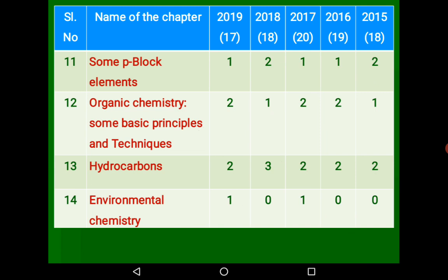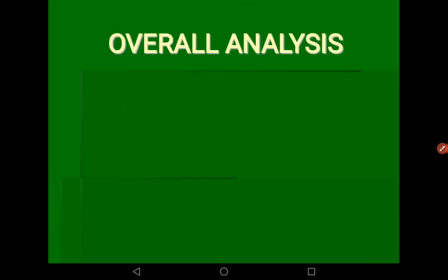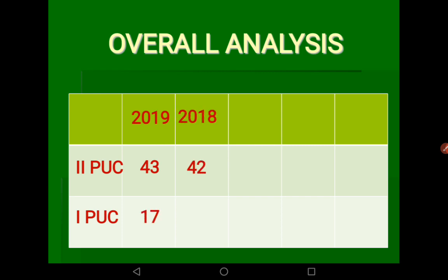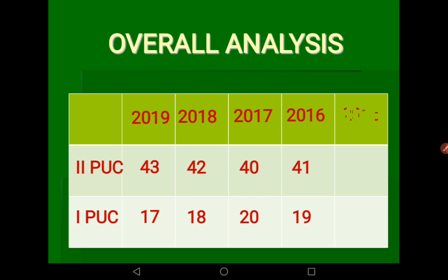In overall analysis, for 2019: 43 questions from Second PUC and 17 from First PUC. In 2018: 42 and 18. In 2017: 40 and 20. In 2016: 41 and 19. In 2015: 42 and 18. So from 2015 to 2019, Second PUC consistently had 40 to 43 questions and First PUC had 17 to 20 questions, making Second PUC chapters very important.